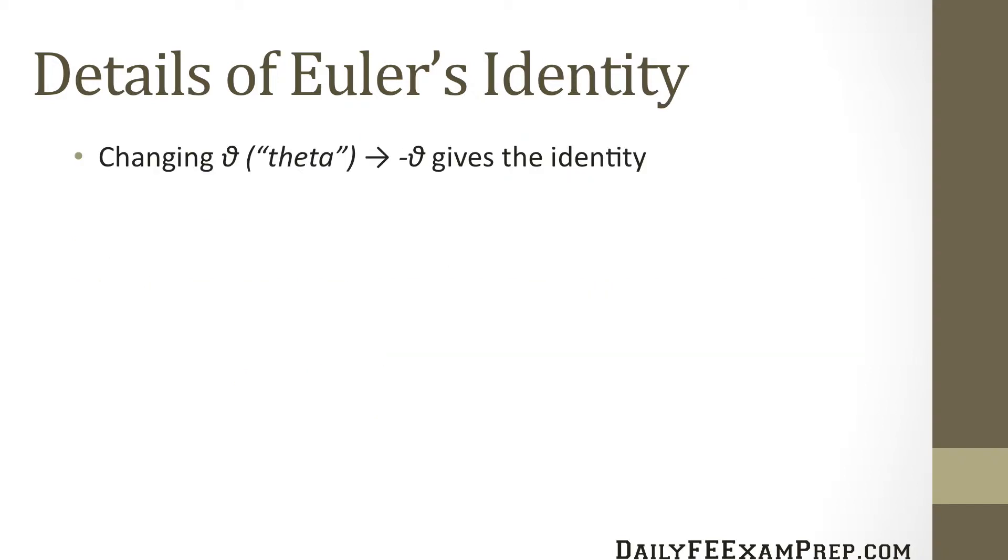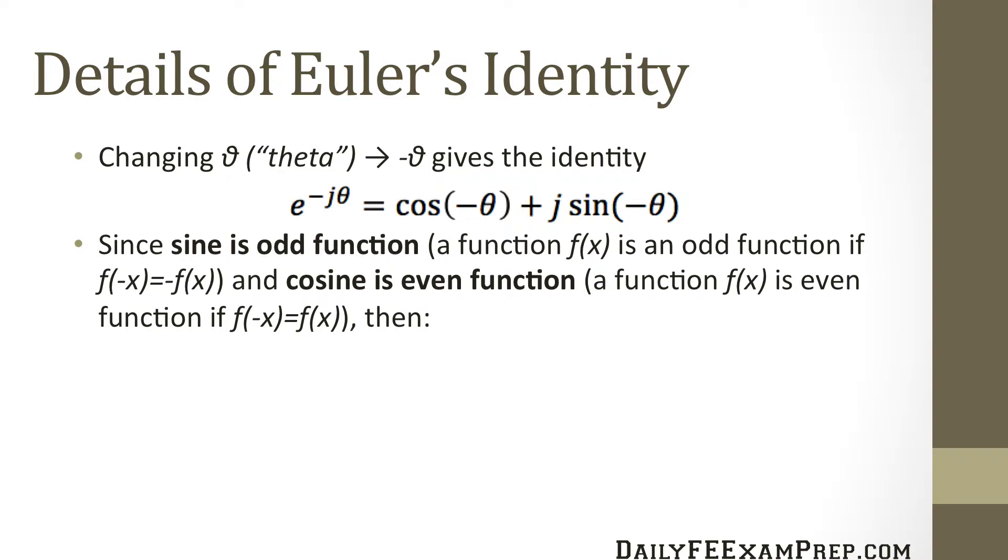Now changing theta into minus theta gives the identity e raised to the minus j theta equals cosine times cosine of negative theta plus j sine of negative theta. Since sine is an odd function, now remember a function f of x is an odd function if f of minus x equals minus f of x, and cosine is an even function which means an even function is defined as f of minus x equals f of x, then cosine of minus theta equals cosine theta and sine minus theta equals minus sine theta. So e raised to the minus j theta equals cosine theta minus j sine theta.